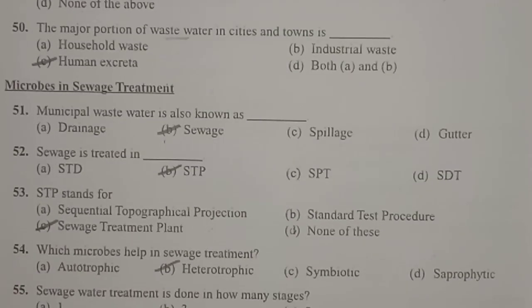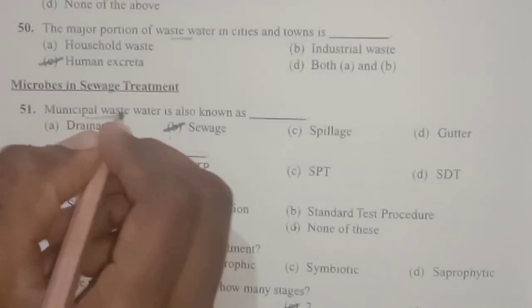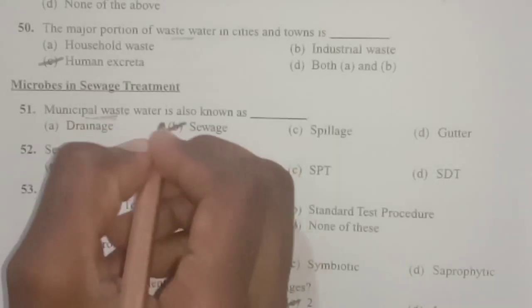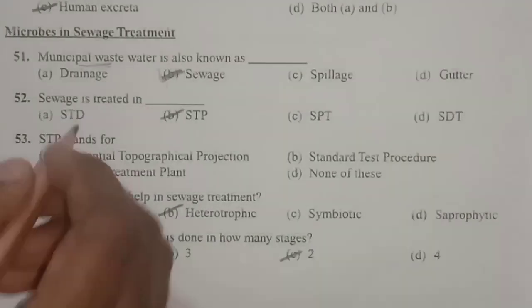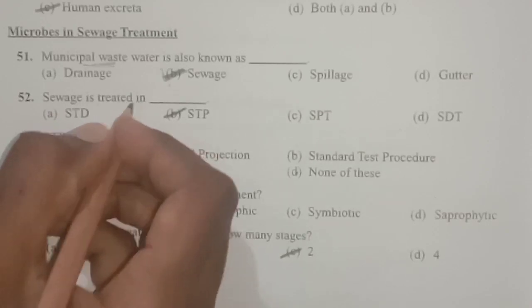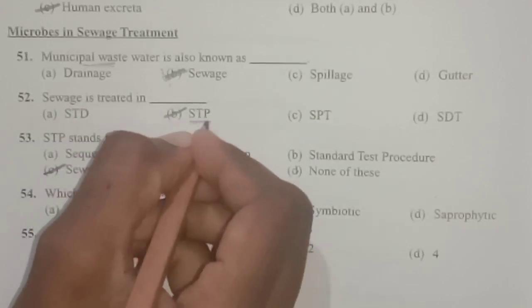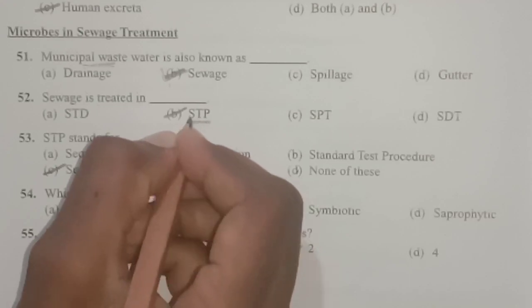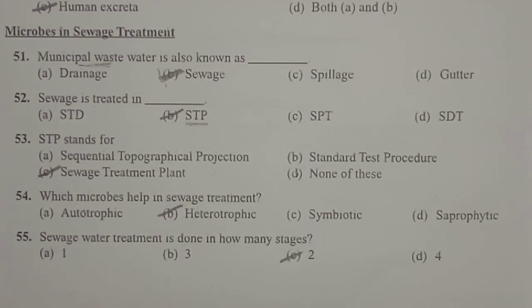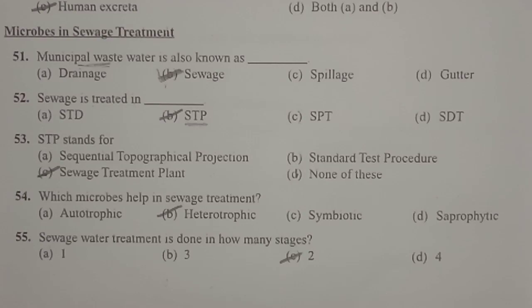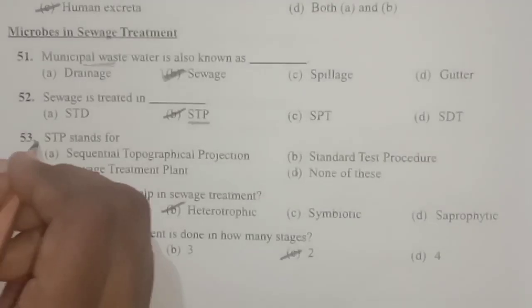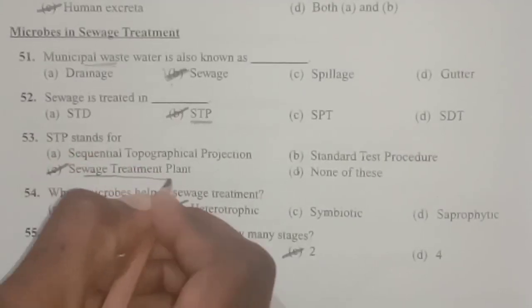Next questions are related to microbes in sewage treatment. Municipal waste water — which is released every day in large quantities — is also known as sewage. The sewage water can be treated only at STPs, which stands for sewage treatment plants.